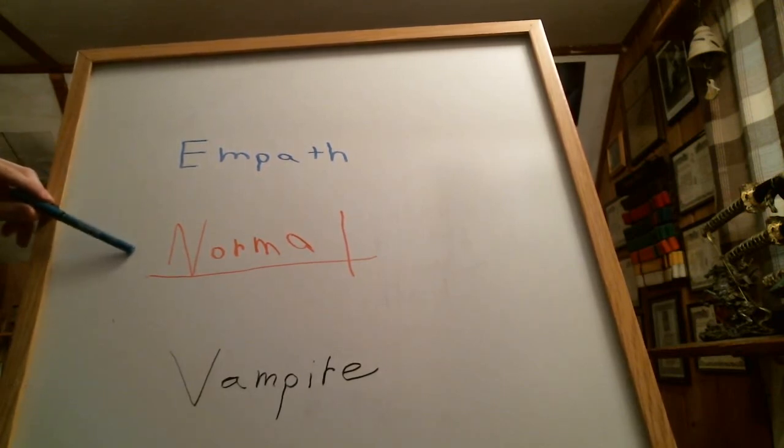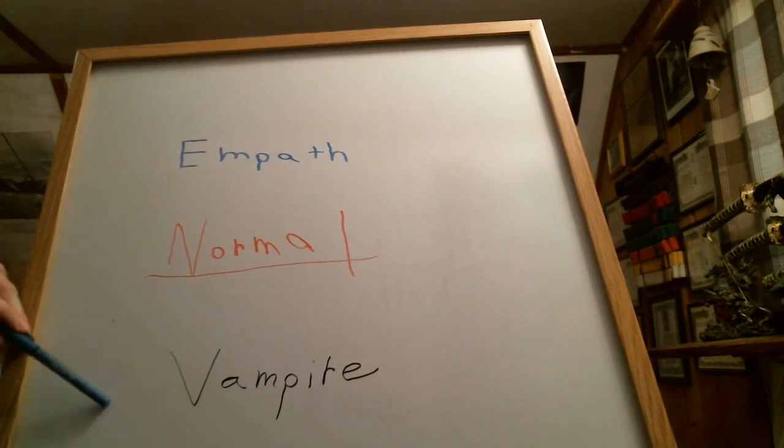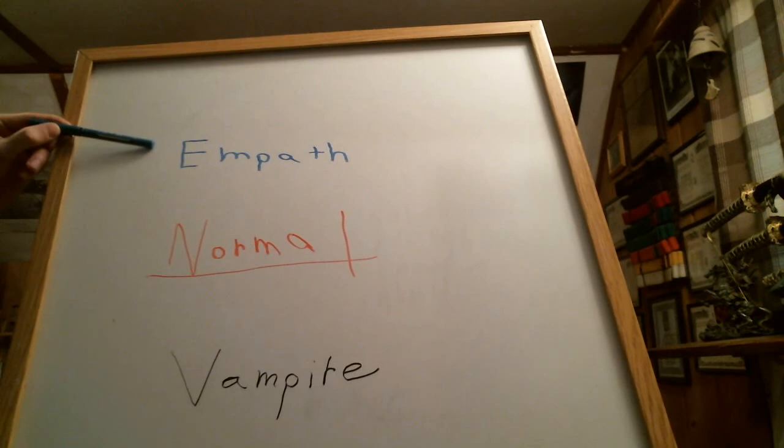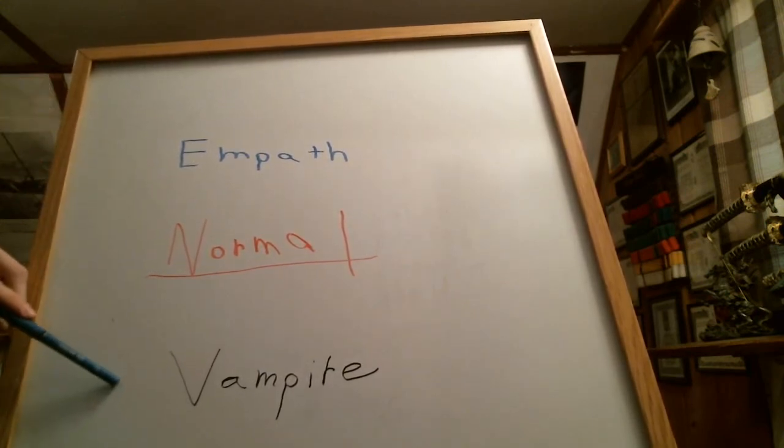Empaths can't connect to the normal person, but the vampire preys upon the empath, and the empath actually wants to help these people down here. Because, for one thing, they think they've been noticed for the first time in their life as being of value by these energy vampires. Of course, the joke's on you. That's not true.